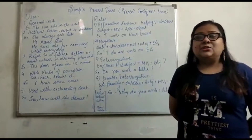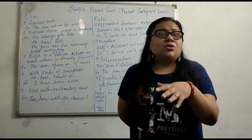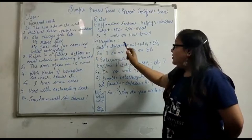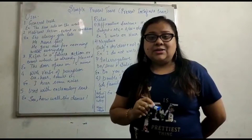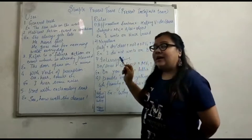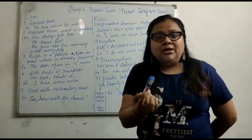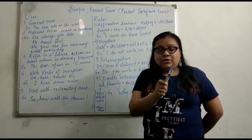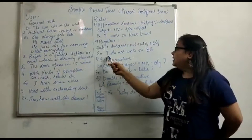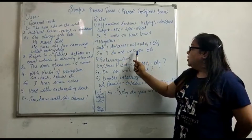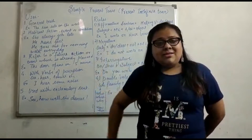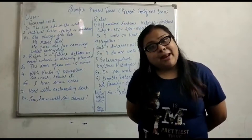Coming on to negative sentences — those which express something not being done. The rule is: subject plus do/does plus not plus main verb first form and object. Do is used with plural subjects and does with singular subjects; I and you are exceptions and take 'do.' For example: I do not write on the blackboard. If it were she or he: she does not write on the blackboard.